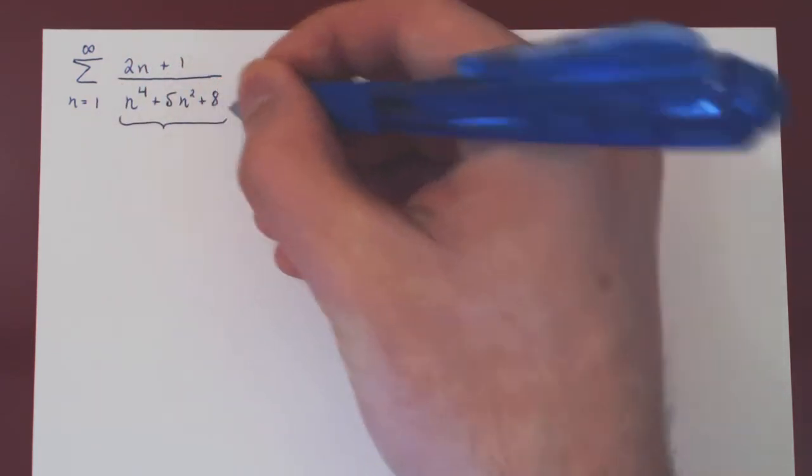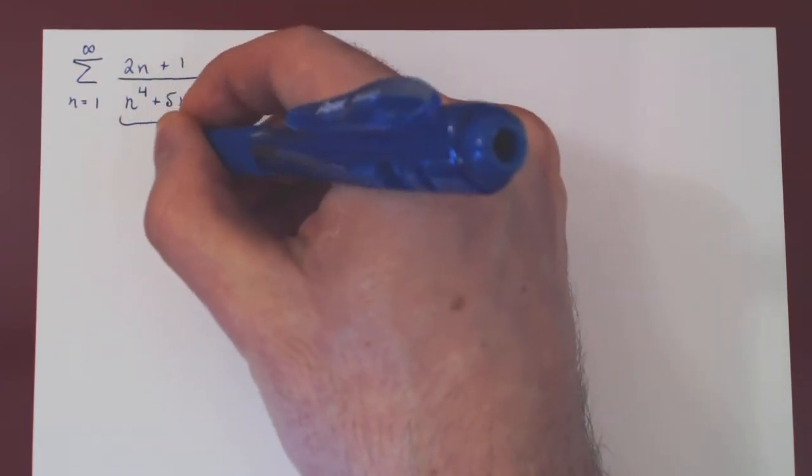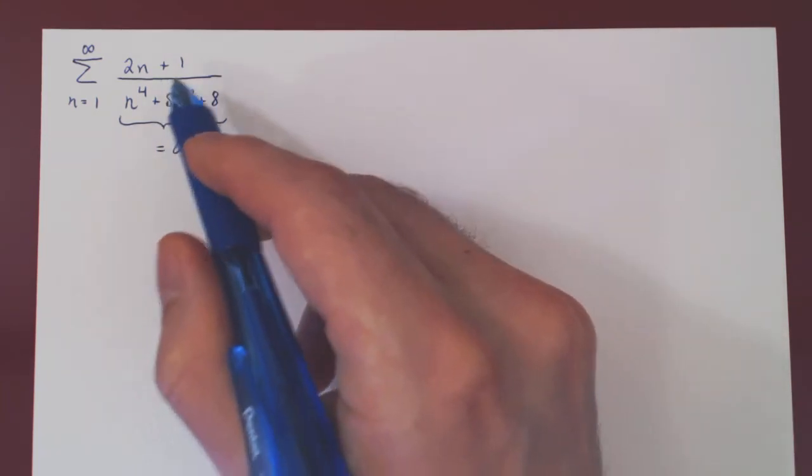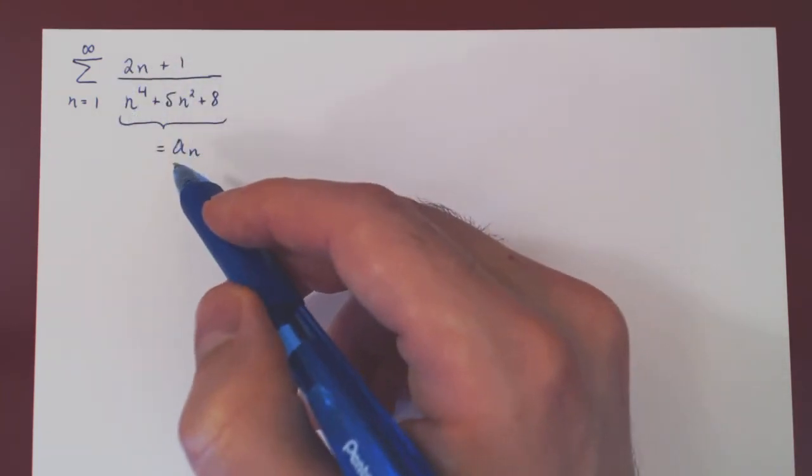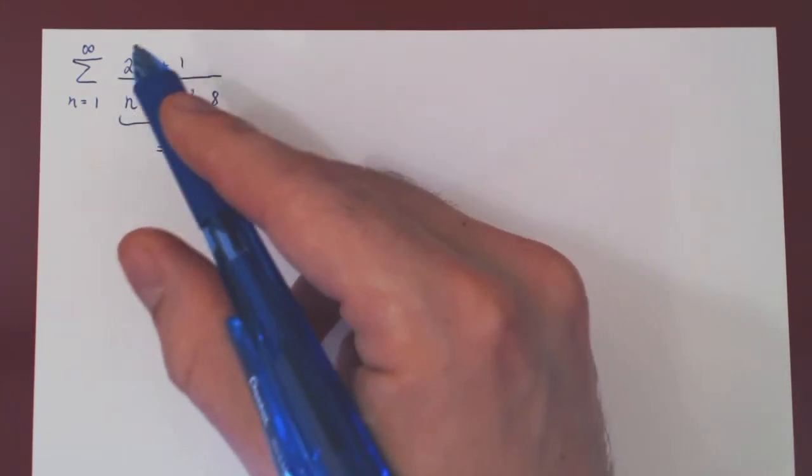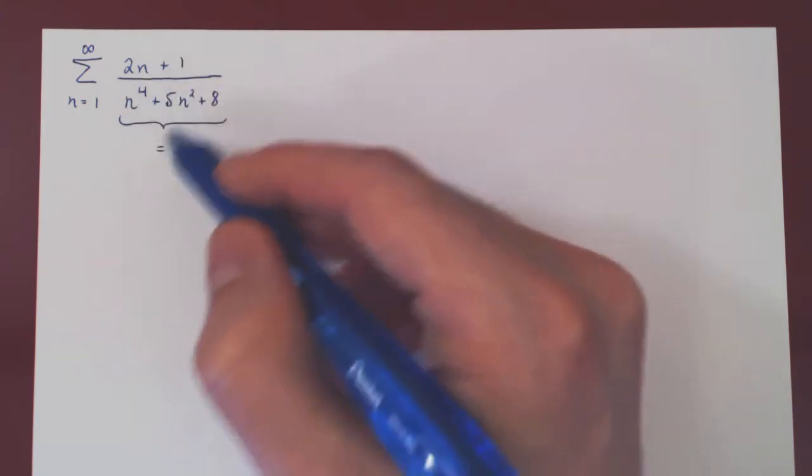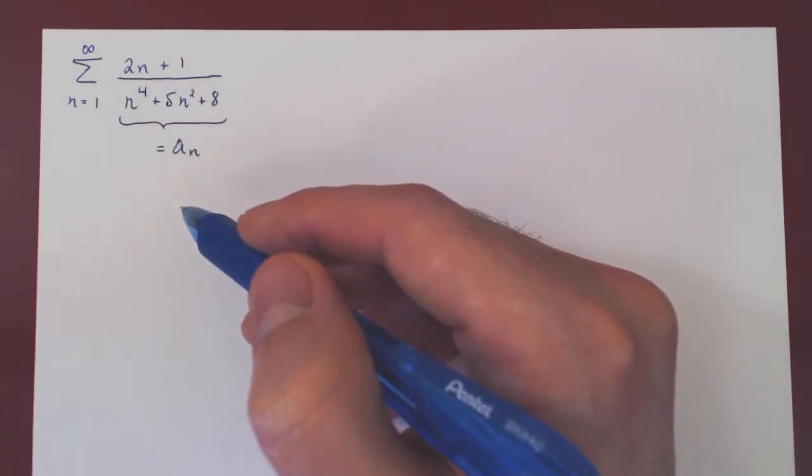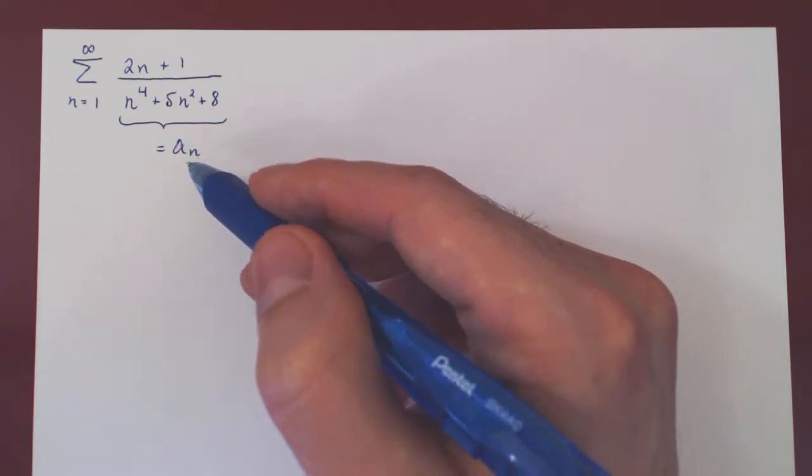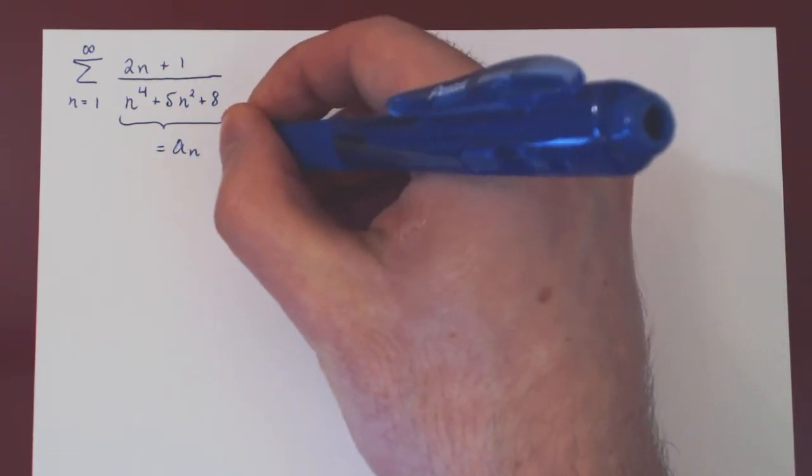So we're summing these terms. So this is our sequence AN. It's a rather complicated sequence. And we're going to try and construct a much simpler sequence that is very close to AN. And again, all we really care about is how big is AN roughly when N is large.